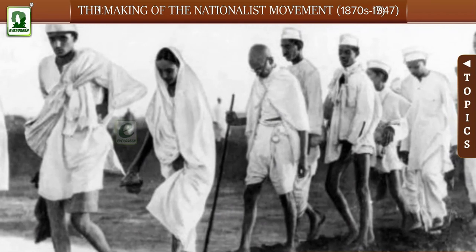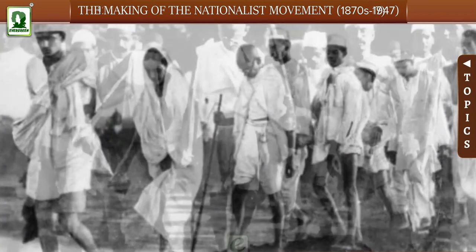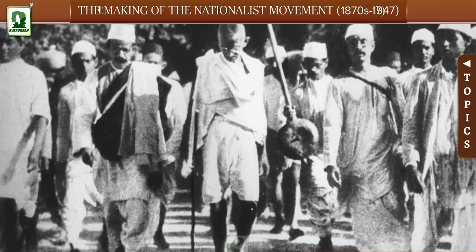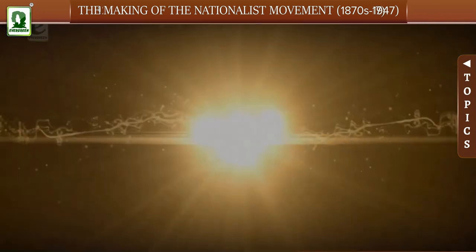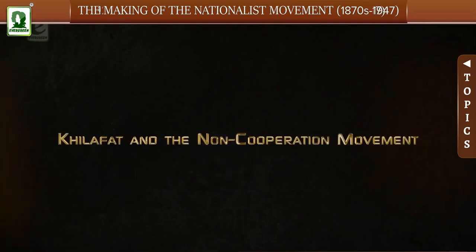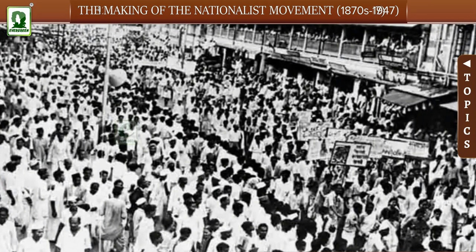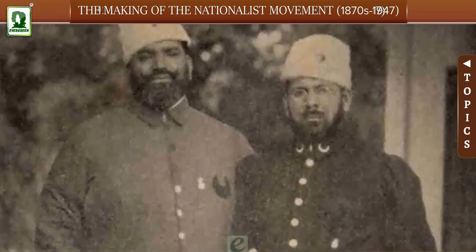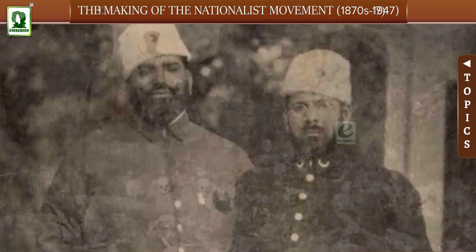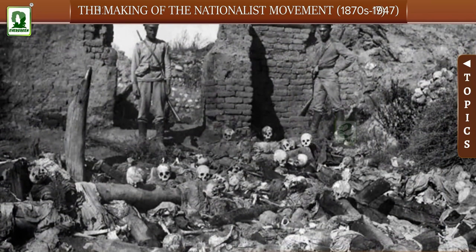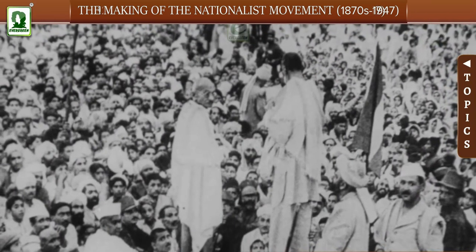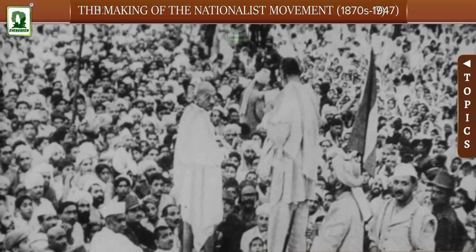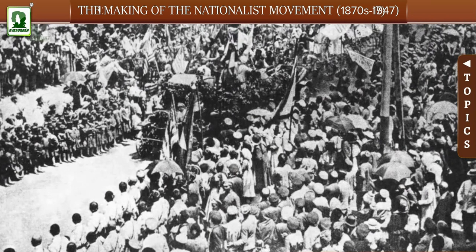Khilafat and Non-Cooperation Movement: Gandhi began organising his first large-scale non-violent Satyagraha — the Non-Cooperation Movement of 1920–1922. The Khilafat movement was started by Ali brothers, Shaukat Ali and Muhammad Ali, to protest against the injustice done to Turkey after the First World War. In 1920, the Khilafat leaders and the Indian National Congress decided to fight together for the cause of Khilafat, redressal of wrongs done to Punjab, and attainment of Swaraj.